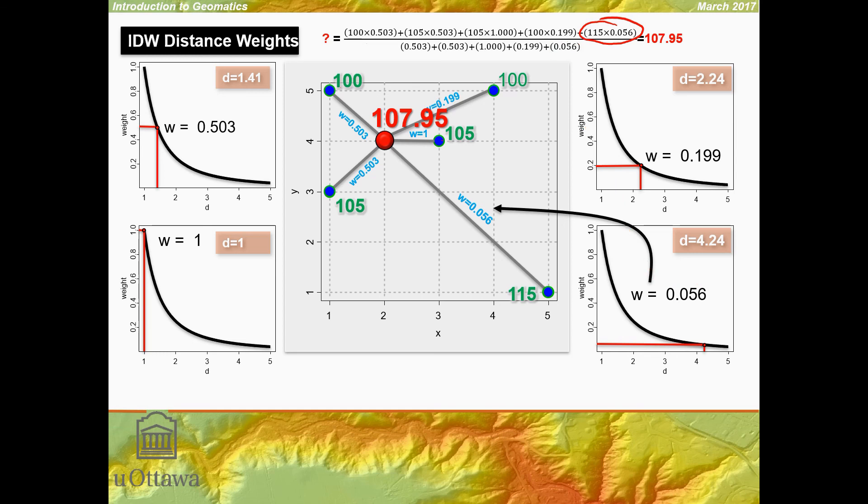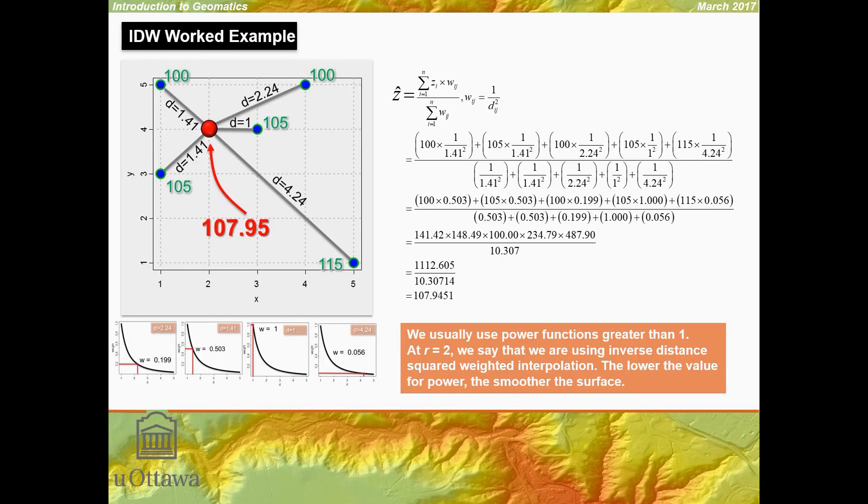Once we do the multiplication and addition, we get 107.95. Our interpolated location's estimate is 107.95. This just shows the same thing I just showed you, as a step-by-step process.